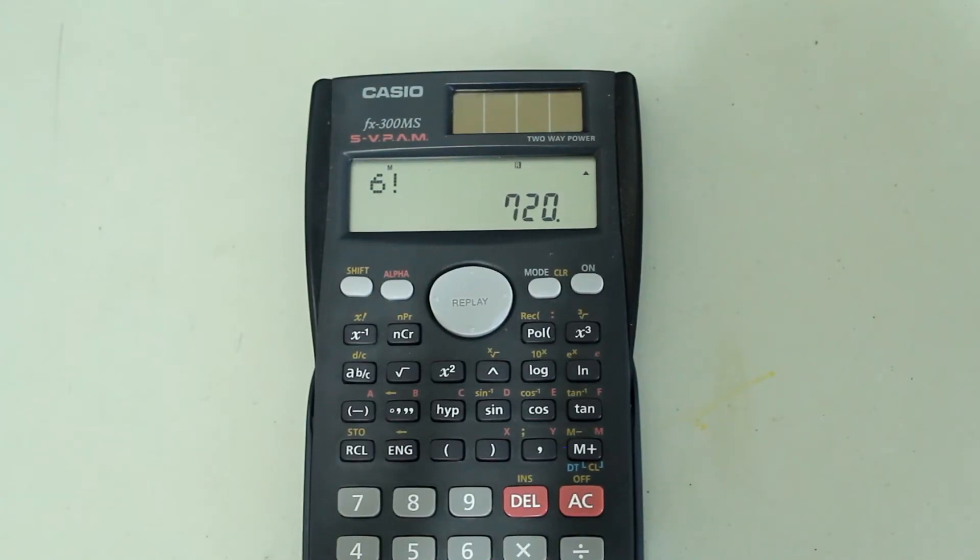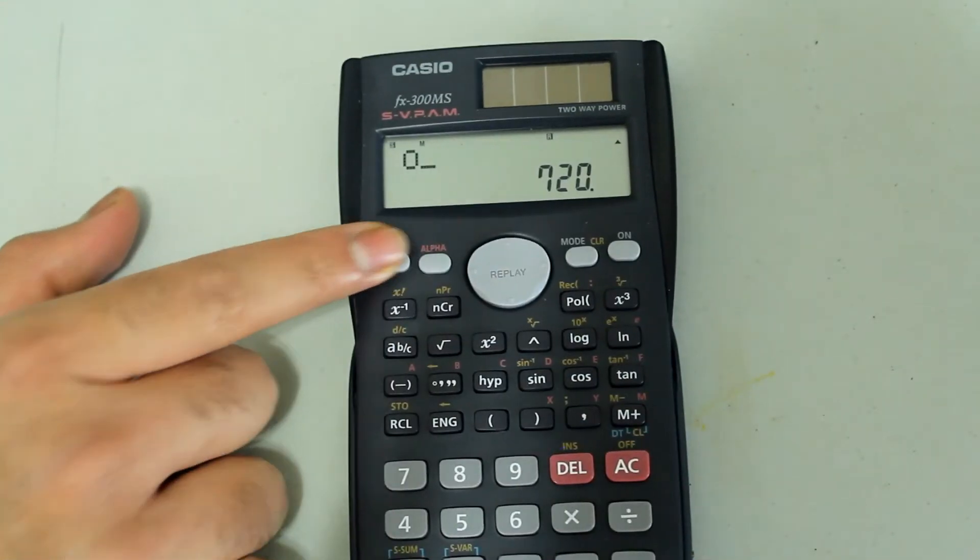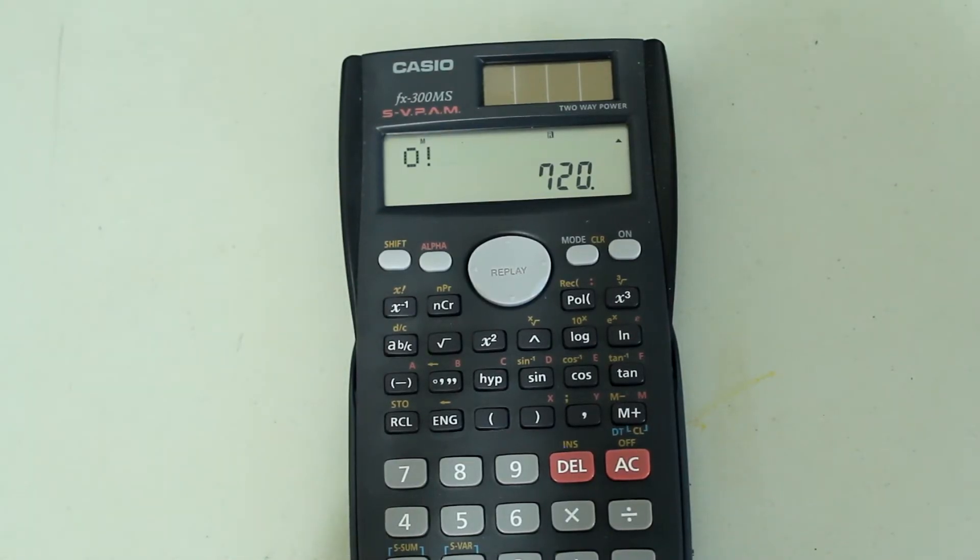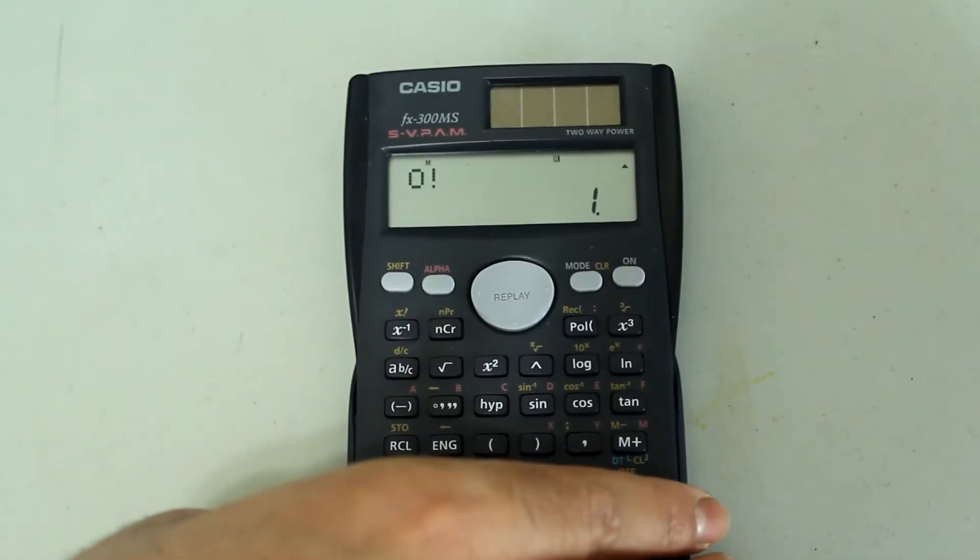Now we can also show that 0 factorial is 1. So type in 0 and then shift and the factorial option by pressing x to negative 1. And then press equals. And we get 0 factorial as 1.